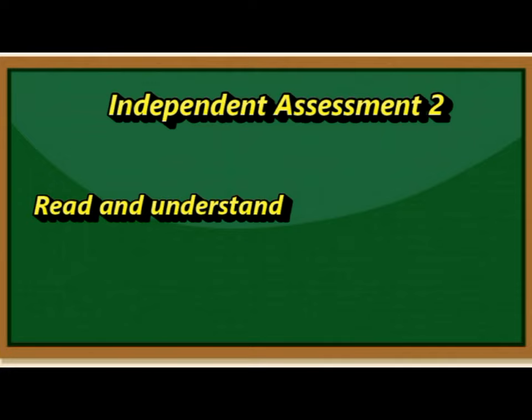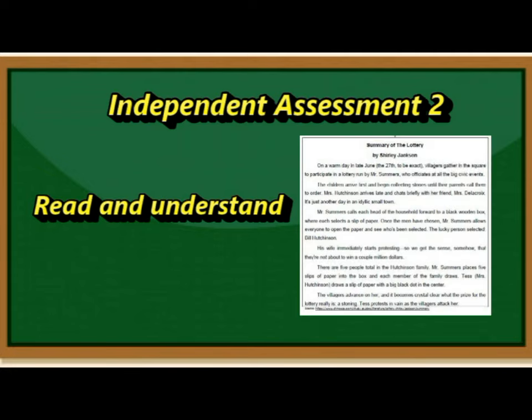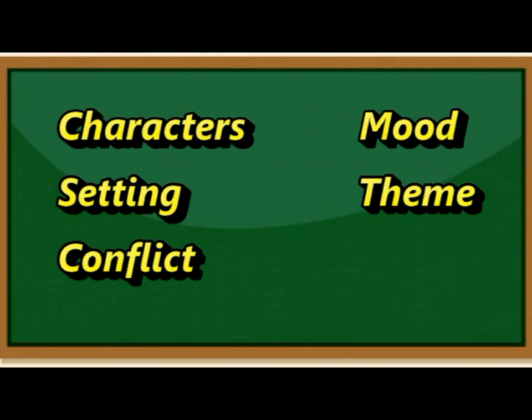Independent Assessment 2 — read and understand the summary of the story The Lottery by Shirley Jackson, which is found in your module. After reading, identify its features and write them on your answer sheet. These are the features you need to identify: characters, setting, conflict, mood, and theme.